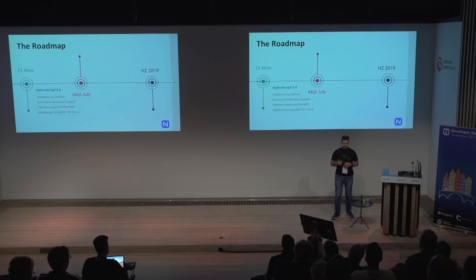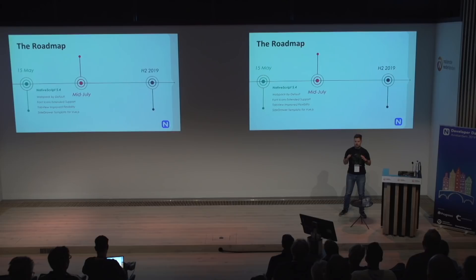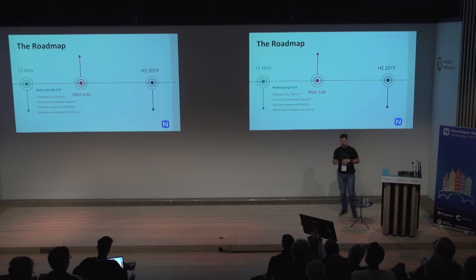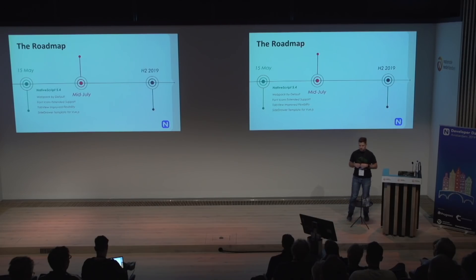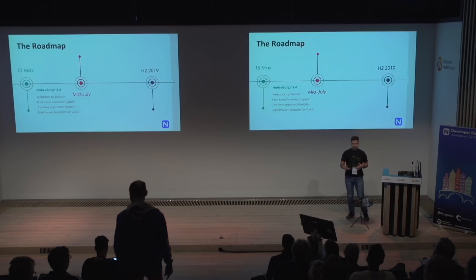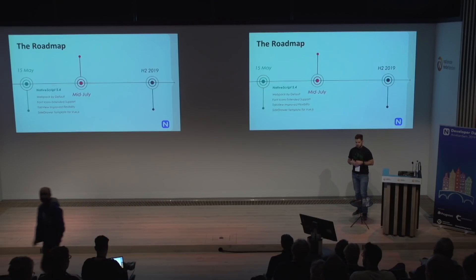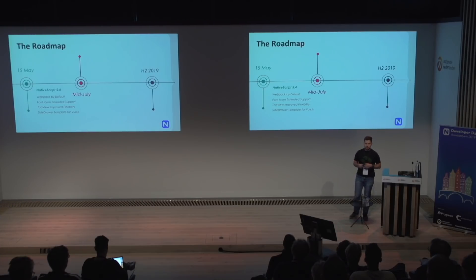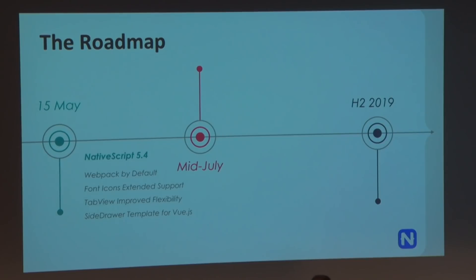The next thing is font icon support. Font icons are something that web developers love and want to use everywhere. Currently we can use font icons in many places in a NativeScript app, but in some special places like the tab view, the action bar, and some other components, it was not possible. With this release we want to enable this as well. We're also planning a lot of improvements to the tab view component — we want to make it easier to use and more customizable. And last but not least is a new template we are working on for Vue.js, which will be based on side drawer, continuing our effort to provide parity between Angular and Vue.js.